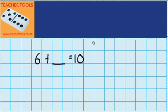So what we need to do first of all is imagine a 10s frame in our head and put 6 counters on it. So imagine what that would look like. Now think to yourself, how many more counters would I need to add to that 10s frame so that the 10s frame has got 10 counters on it? Try and imagine that in your head now.